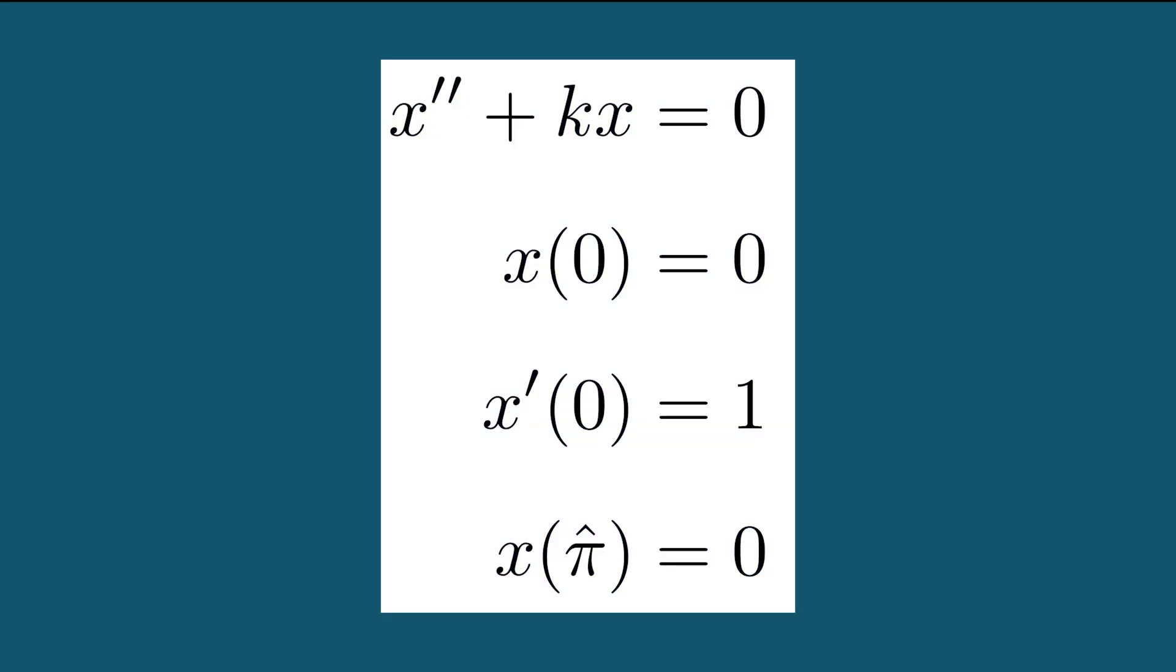Now we have the more general boundary value problem, x double prime plus k times x equals zero, where the initial position is zero, the initial velocity is one, and the first positive zero crossing is at pi hat.